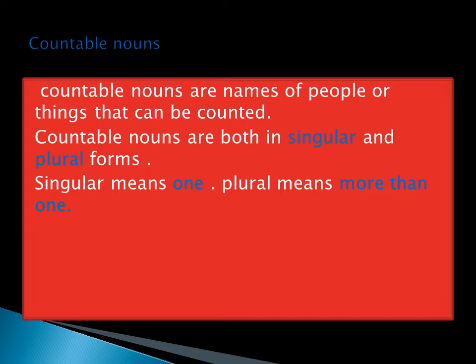Countable nouns are names of people or things that can be counted. Countable nouns are both in singular and plural forms. Singular means one, and plural means more than one.